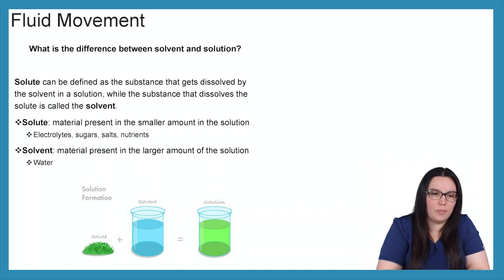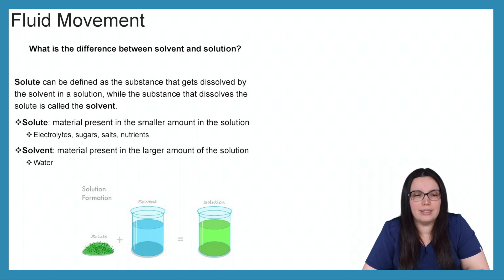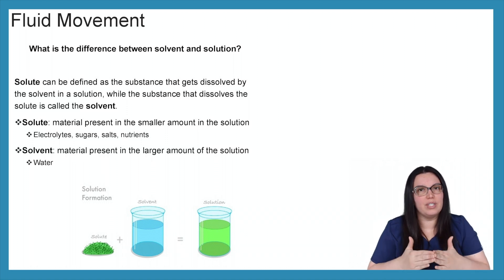As you can see from my picture, the solute is the material present in the smaller amount of the solution, like electrolytes, sugars, salts, and nutrients. The solvent is the material present in a larger amount of the solution such as water. When we add both of those together, our solute and our solvent, we get our solution.